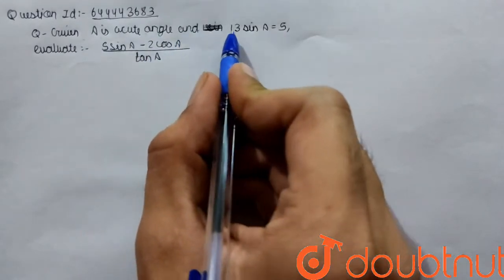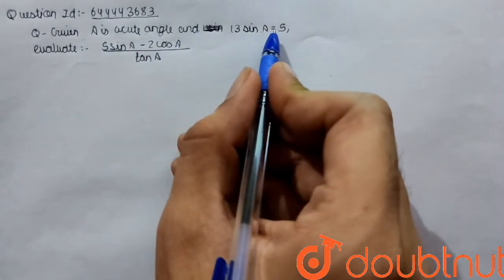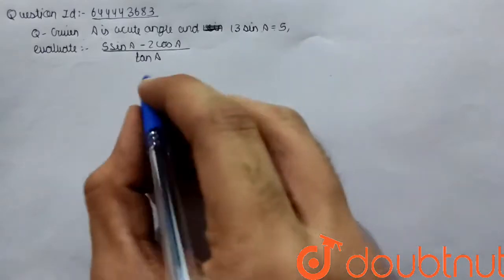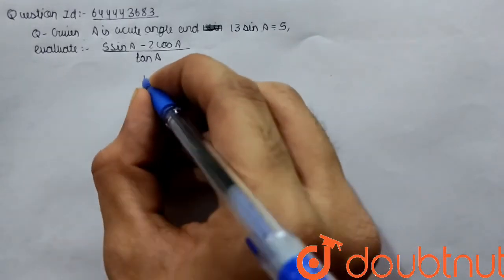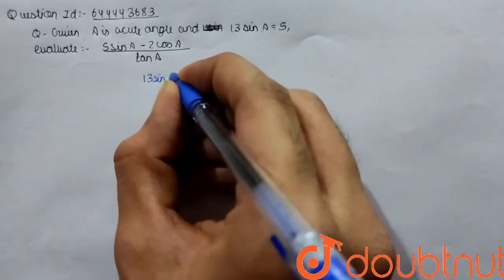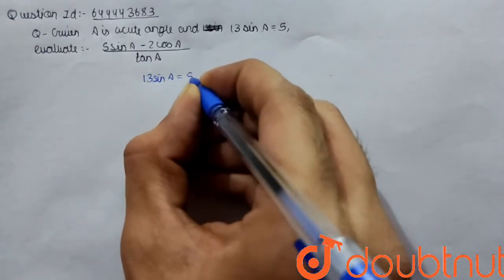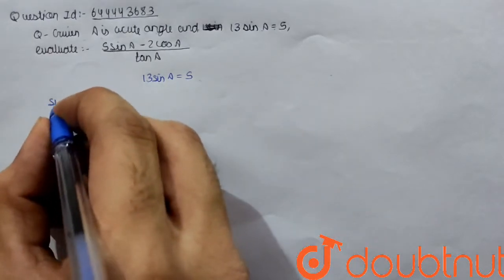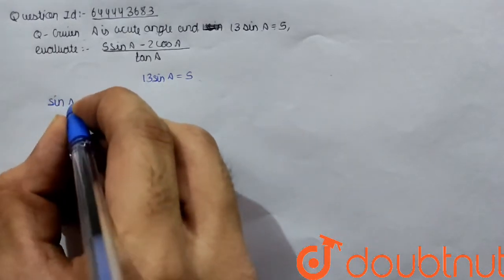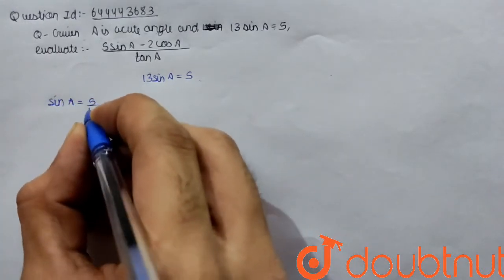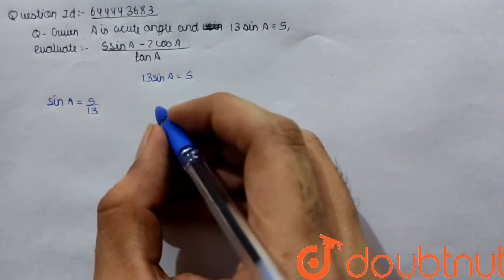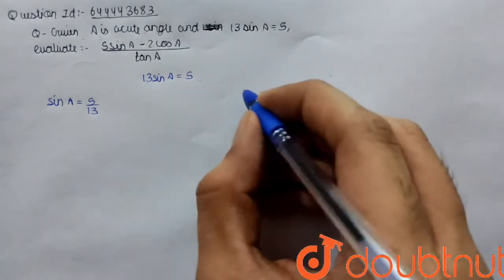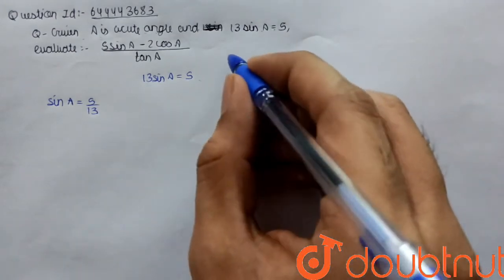The given question is: A is an acute angle and 13 sin A equals 5. We have to evaluate this. We are given that 13 sin A equals 5. Dividing both sides by 13, sin A equals 5 by 13.